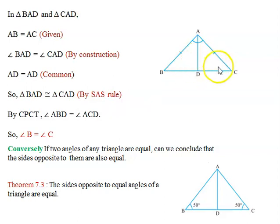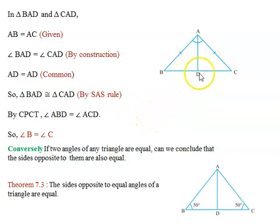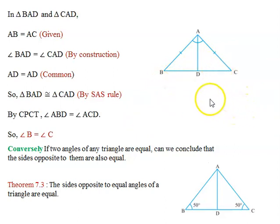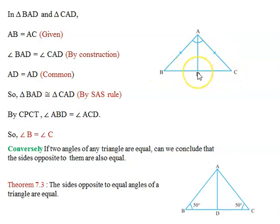When two triangles are congruent, the corresponding parts are always equal. So all corresponding sides and angles will be equal. Therefore, angle ABD is equal to angle ACD, which is nothing but angle B equal to angle C. So this completes the proof.